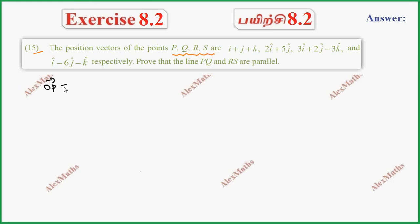So, OP vector - first vector is I plus J plus K. Then, OQ vector is 2I plus J plus 0K.